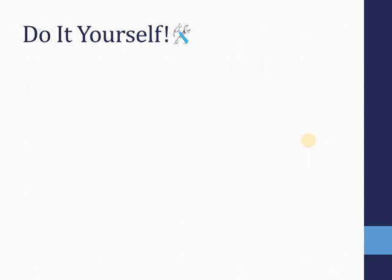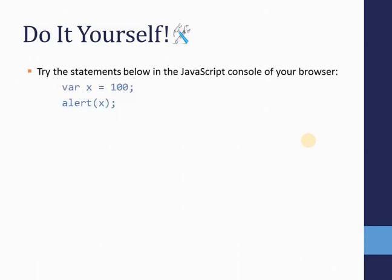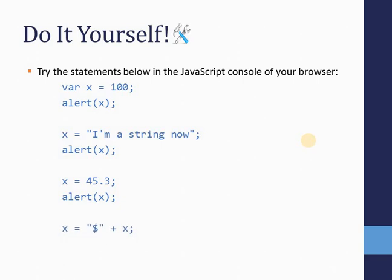Here is an exercise for you: declare one variable and pop it up in an alert box. Assign a number first, then assign a string value and show it in an alert box. Then assign a floating point number and show it in an alert box. Finally, there is a concatenation of a string and a number — just watch the output when you practice it. This is your homework.